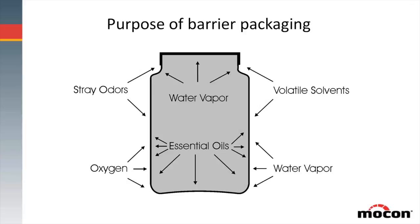Overall, when we look at barrier packaging, we're looking at things coming from two directions — either from inside the package going out or outside the package coming in. It's a very real-life situation because you might have a product put on a shelf next to another product. For example, in a convenience store, if someone has a laundry detergent and puts it on a shelf next to a bottle of water, some of those aromas from laundry detergent could permeate through to the water and give you a bad taste or flavor.